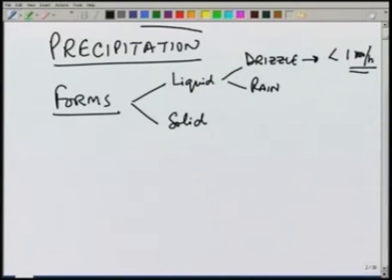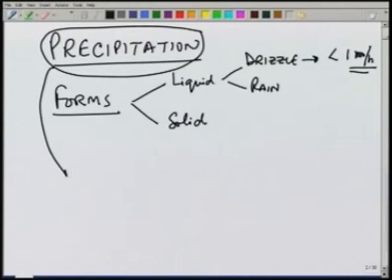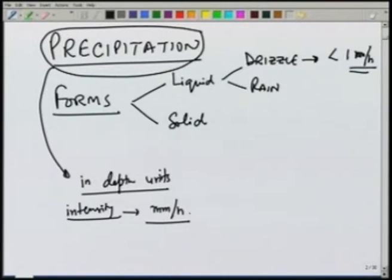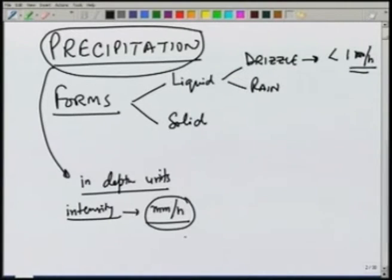The rainfall or the precipitation is measured in depth units. When we say there is a precipitation of 1 millimeter or 1 centimeter, it indicates that over a certain area, if the entire precipitation stands on that area uniformly, it will have a depth of 1 centimeter or 1 millimeter. The intensity of precipitation is measured in terms of depth per unit time — typically millimeters per hour, sometimes centimeters per hour or millimeters per day. Millimeter per hour is the conventional unit.